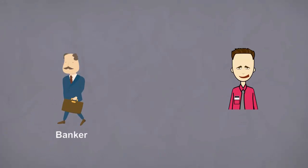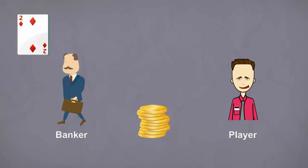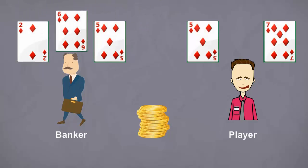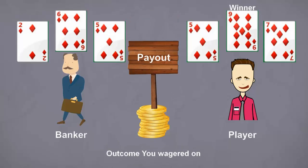You'll place your bet on who you think will have the winning hand, then two cards are dealt to each the banker and player. A natural win occurs when a hand has 8 or 9, otherwise a third card may be dealt to decide the winner. Payouts are made depending on which outcome you wagered on.